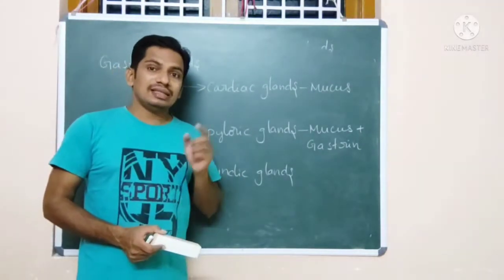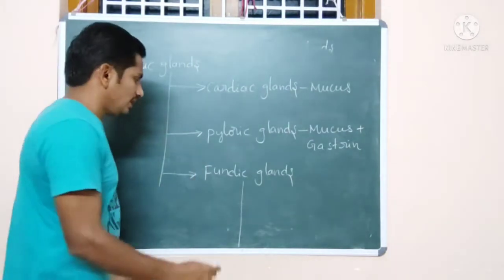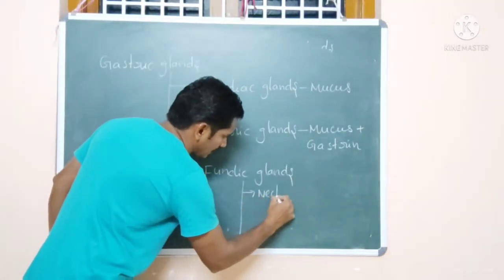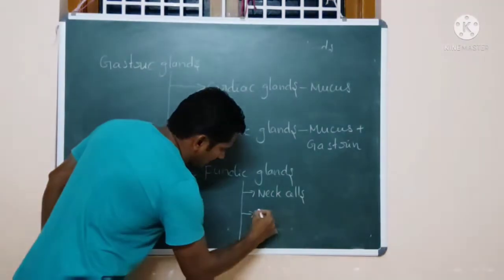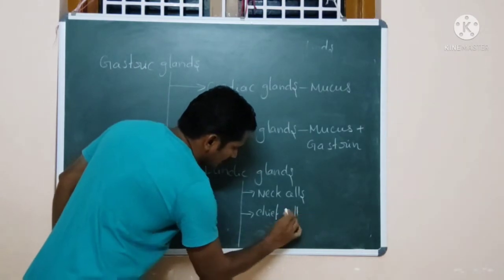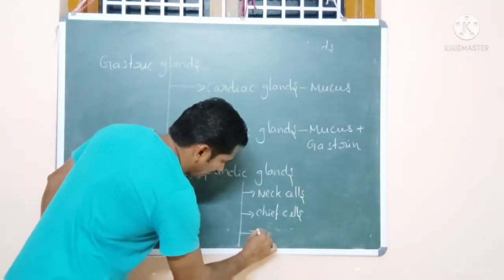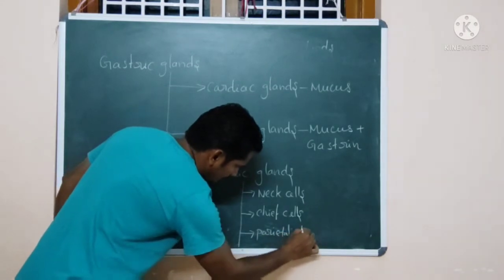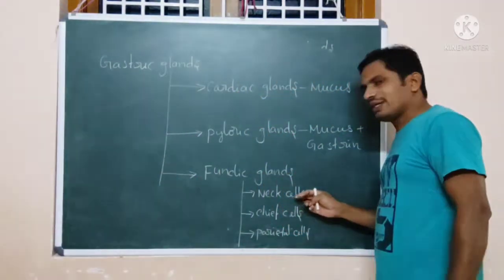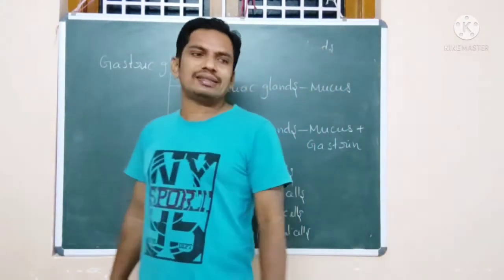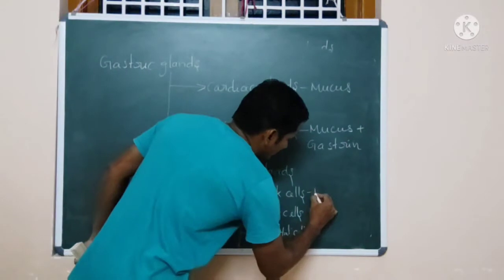Whereas the fundic glands have three kinds of cells. The first one is the neck cells, the second type are the chief cells, and the third kind is the parietal cells. Neck cells secrete mucus.